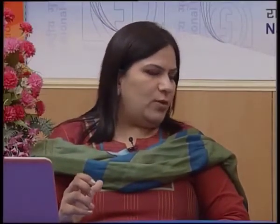The standard format uses cost of goods sold. If both sales and gross profit are given so we can calculate COGS, we use COGS. If only annual sales are given without a gross profit rate, we can use sales. However, more appropriate is cost of goods sold because stock is always related to cost, not sales.